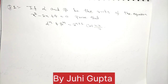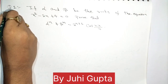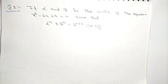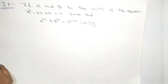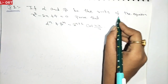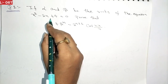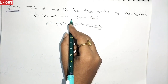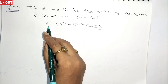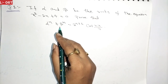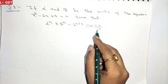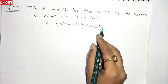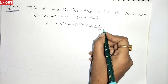Hello everyone. In today's video we will talk about some important questions, like we saw some important questions in the last lecture too. Our question number 1 is: if alpha and beta are the roots of the equation x squared minus 2x plus 4 equal to 0, prove that alpha raised to the power n plus beta raised to the power n equals 2 raised to the power n+1 into cos(nπ/3).